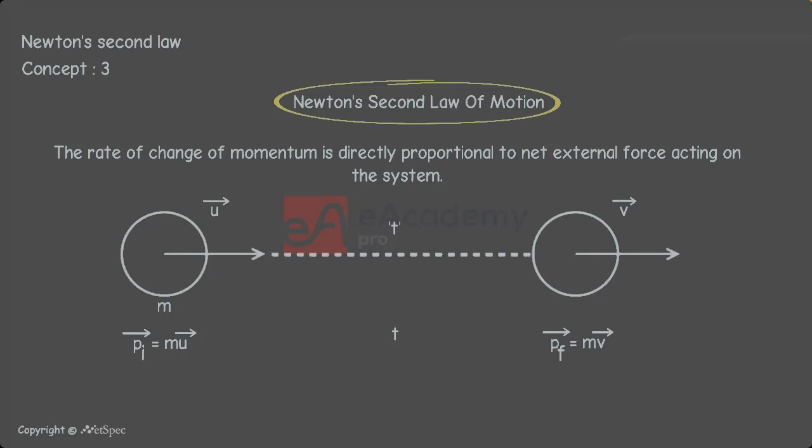Now, in this time duration t, how much change is observed in the momentum of the body is equal to delta p bar is equal to pf bar minus pi bar. This is called change in momentum and this change in momentum is at t time.